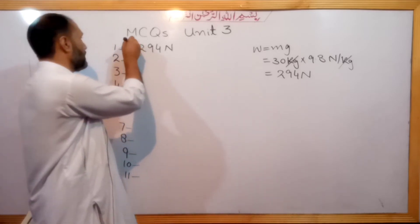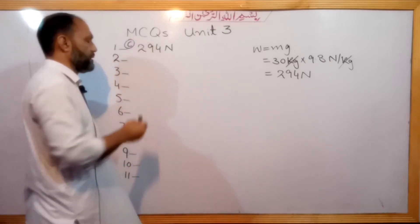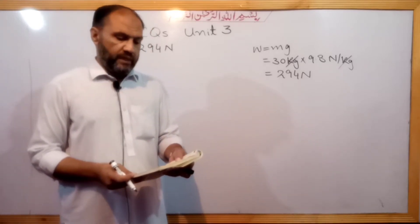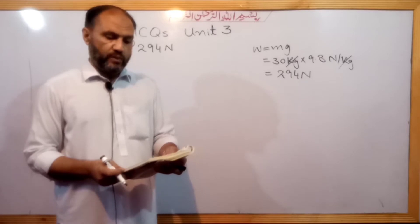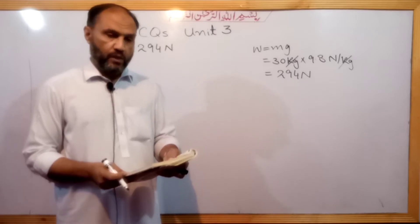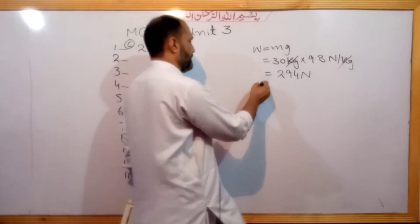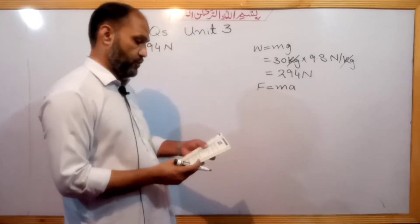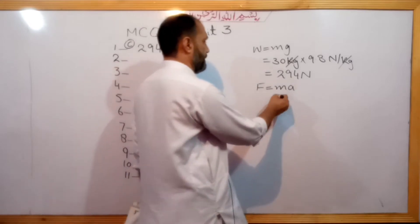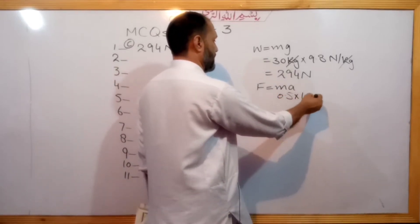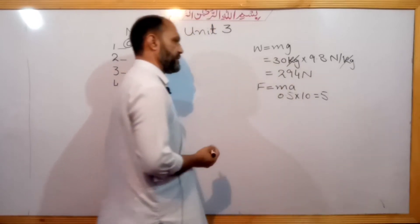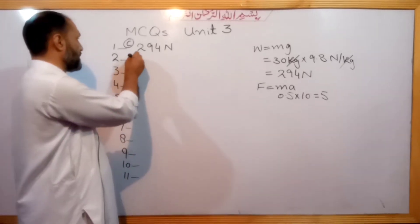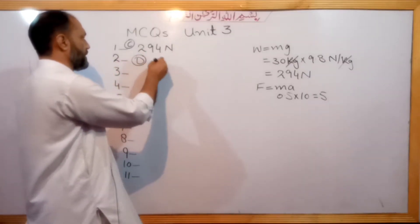Question number 2. The force needed to produce an acceleration of 10 m/s² in a ball of mass 0.5 kg. Using Newton's second law, F = ma. Mass is 0.5 kg, acceleration is 10 m/s². So F = 0.5 × 10 = 5 Newton. The answer is option D: 5 Newton.